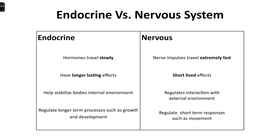The endocrine system is a whole lot slower - the levels of hormones have to change in the blood and reach their target, and the effects on the target are longer-term too. It's about the levels of hormones in the blood and them reaching their targets. It all takes a bit longer. So the endocrine system tends to regulate bigger-picture, longer-term things like growth and development.